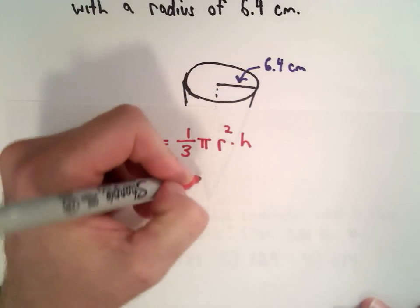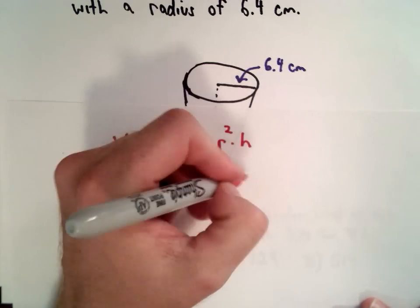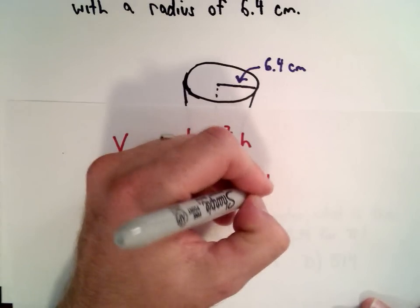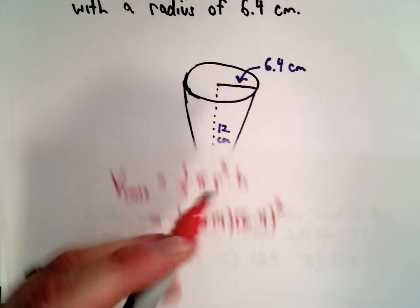I'm going to go ahead and fill everything in. So we have one-third. Again, we're approximating pi by using 3.14. The radius was given to us as 6.4, and again we have to square that. And the height was 12.